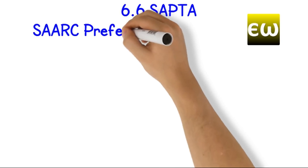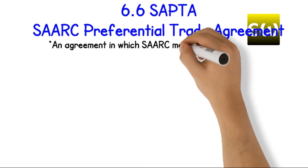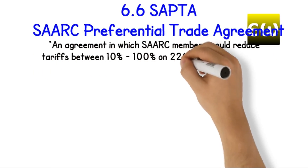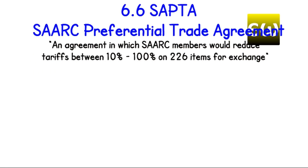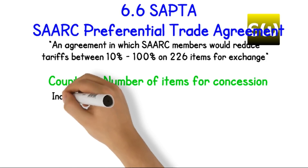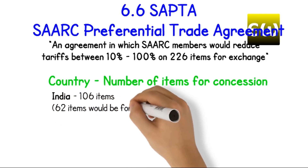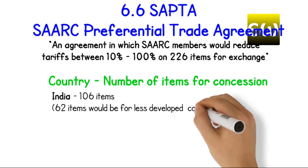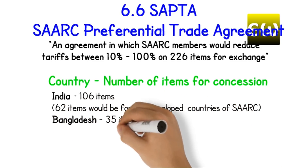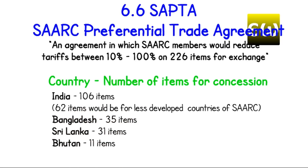SAARC Preferential Trade Agreement. An agreement in which SAARC members would reduce tariffs between 10% to 100% on 226 items for exchange. Country and number of items for concession: 106 items. 62 items would be for less developed countries of SAARC. Bangladesh: 35 items. Sri Lanka: 31 items. Bhutan: 11 items.